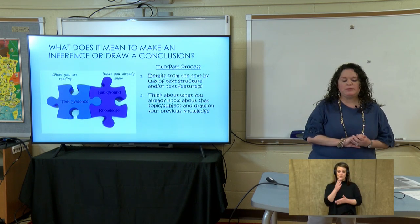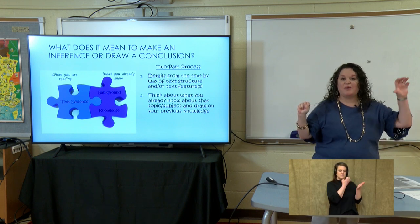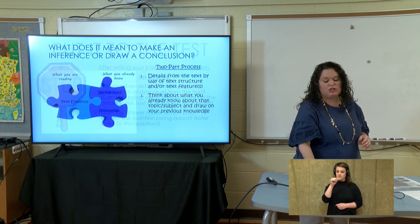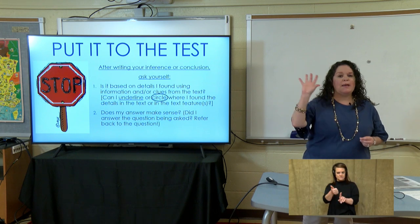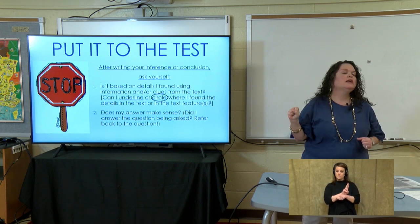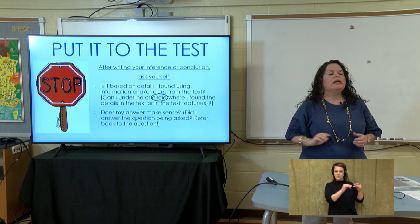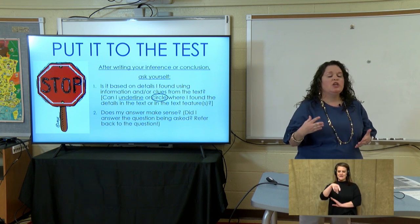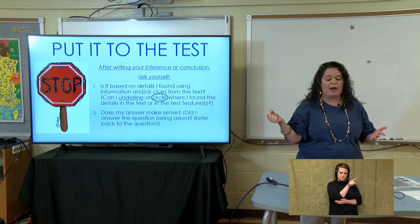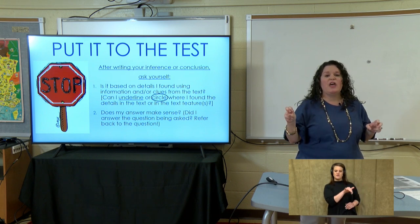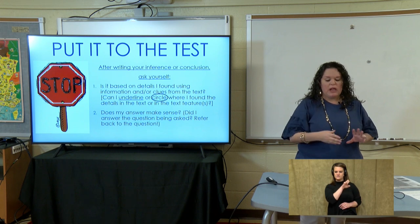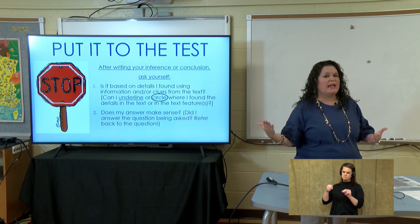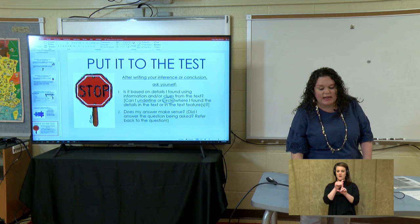There is that two-part puzzle piece. The text evidence, along with your background knowledge, will help you draw that conclusion. Don't forget to put it to the test: Am I using the actual text? Can I circle or underline? Don't forget to use the captions and the actual photograph. You might be able to circle something within the photograph — that could be text evidence, even though it's not literal words or letters. And then ask yourself: does my answer make sense? Did I really answer the question?